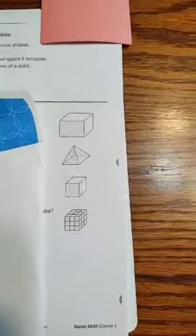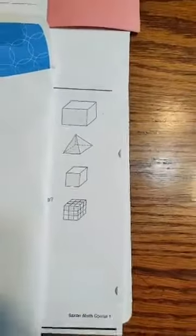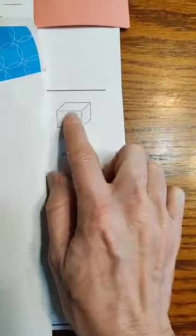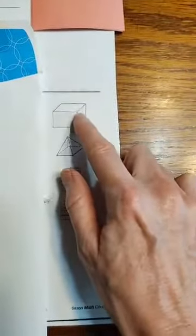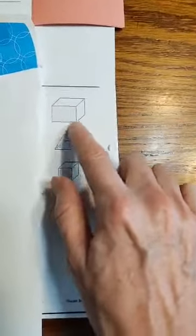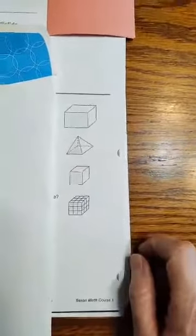So some of the characteristics of these shapes are that they have faces. A face is the flat part on each side. Those are the faces of the shape. So this is faces, this triangle. Each of these triangles is the face and the square. And then this has faces.